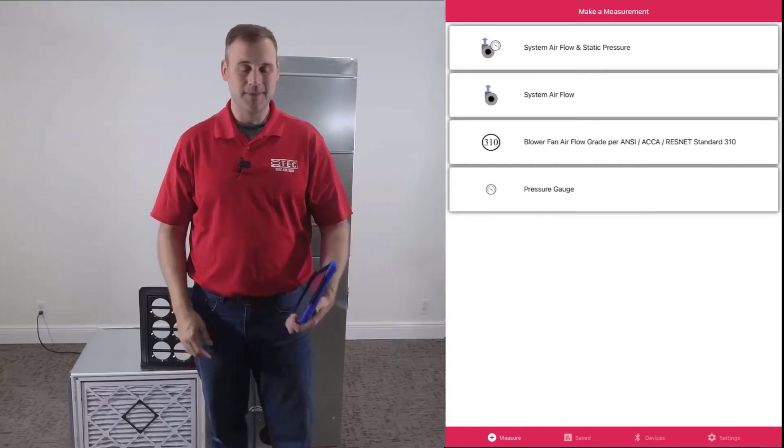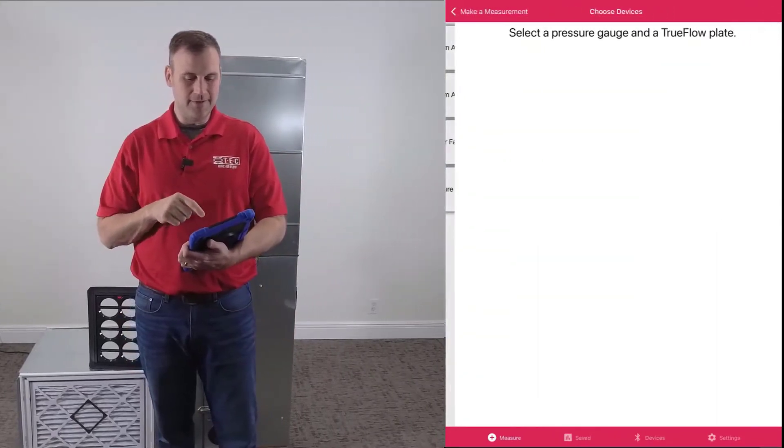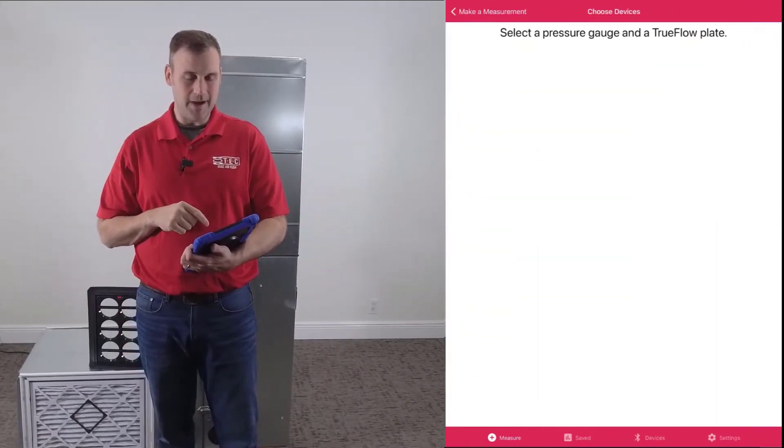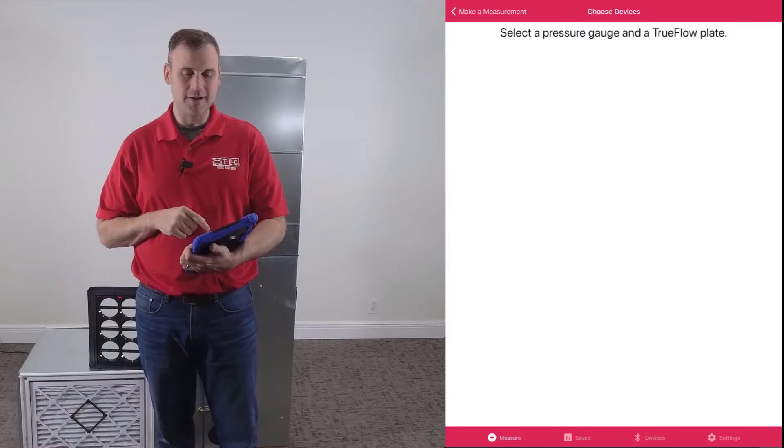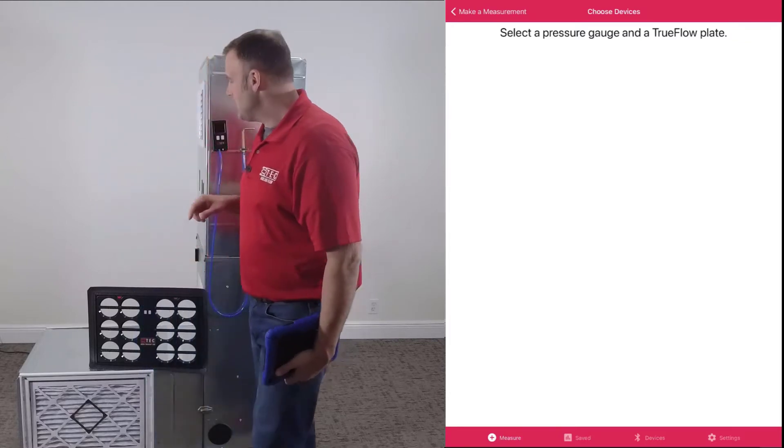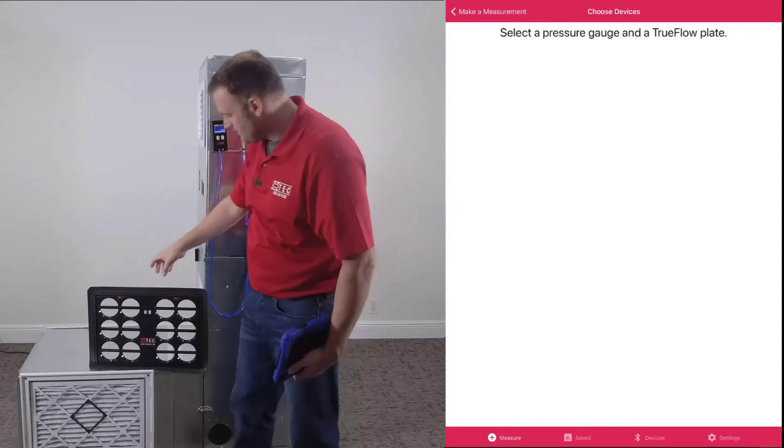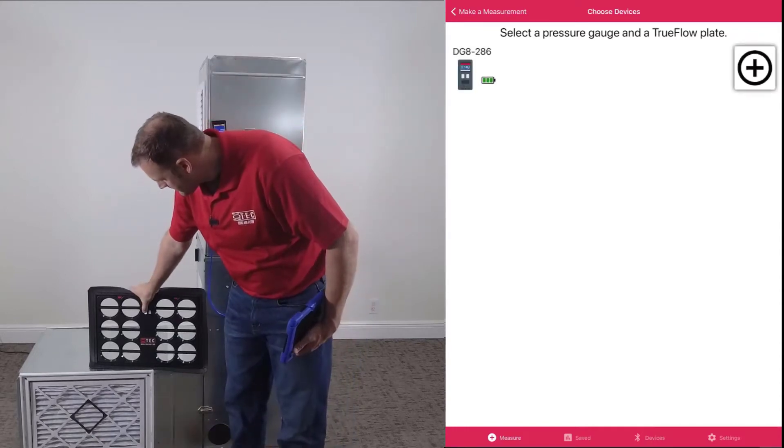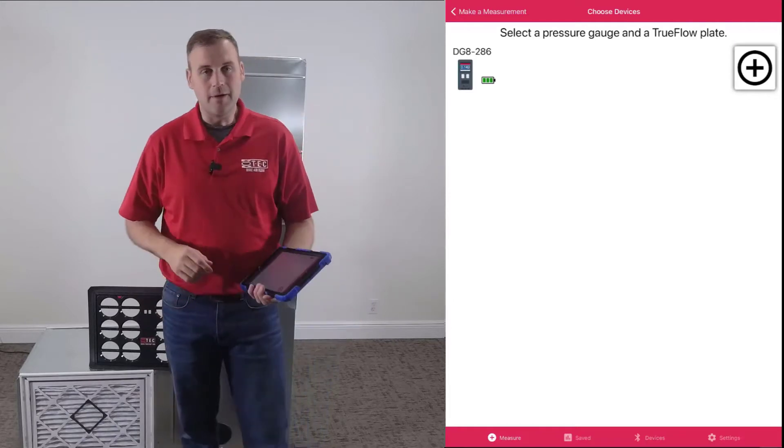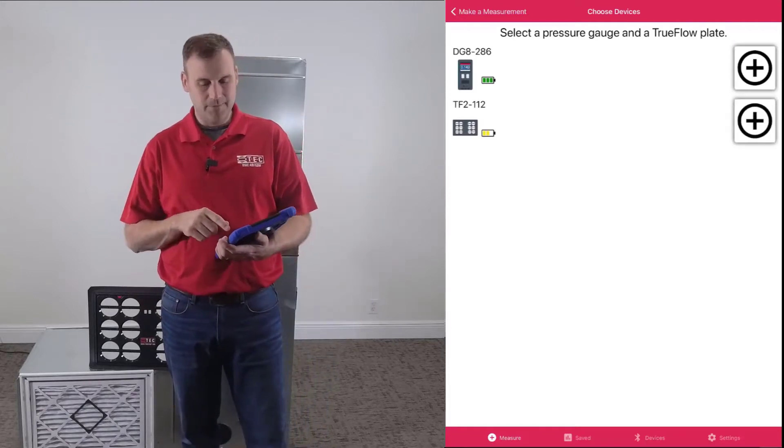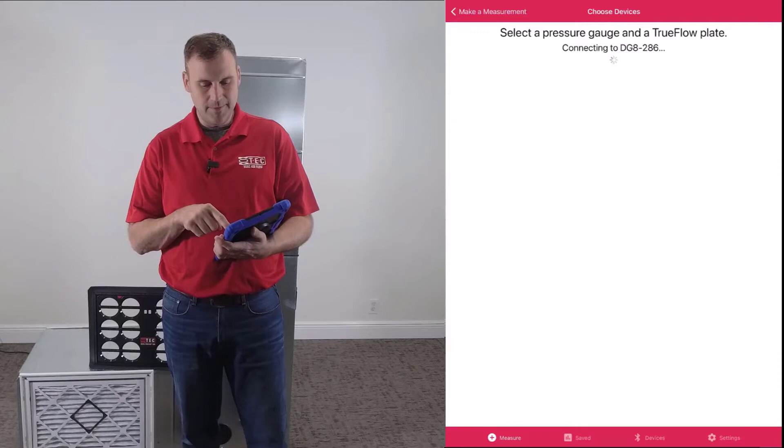Let's get into a demonstration. I'm going to select System Airflow and Static Pressure. You'll notice my app says select a pressure gauge and a TrueFlow plate. Let's go ahead and power up our devices. With our devices powered up, you'll see them on the screen. Let's go ahead and hit the plus. That'll connect our devices Bluetooth to our device.